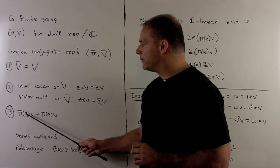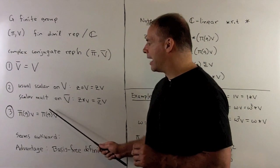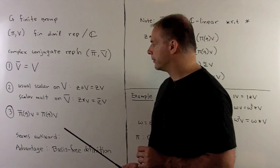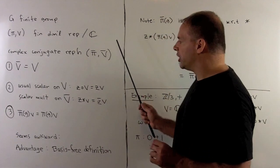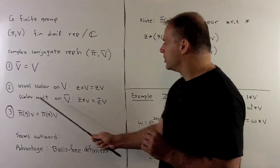Pi bar of G on V is equal to pi of G on V. You note, the only change we're making in this representation is how we multiply by scalars.